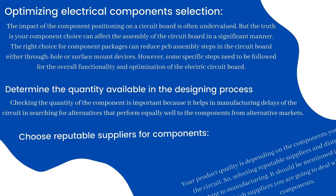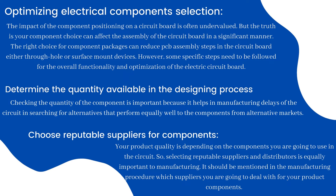Optimizing electrical component selection: the impact of component positioning on a circuit board is often undervalued. But the truth is your component choice can significantly affect the assembly of the circuit board. The right choice of component packages can reduce PCB assembly steps, whether through-hole or surface mount devices. Some specific steps need to be followed for overall functionality and optimization. First, determine the quantity available in the designing process — checking component quantity helps avoid manufacturing delays and the need to search for alternatives from alternative markets.